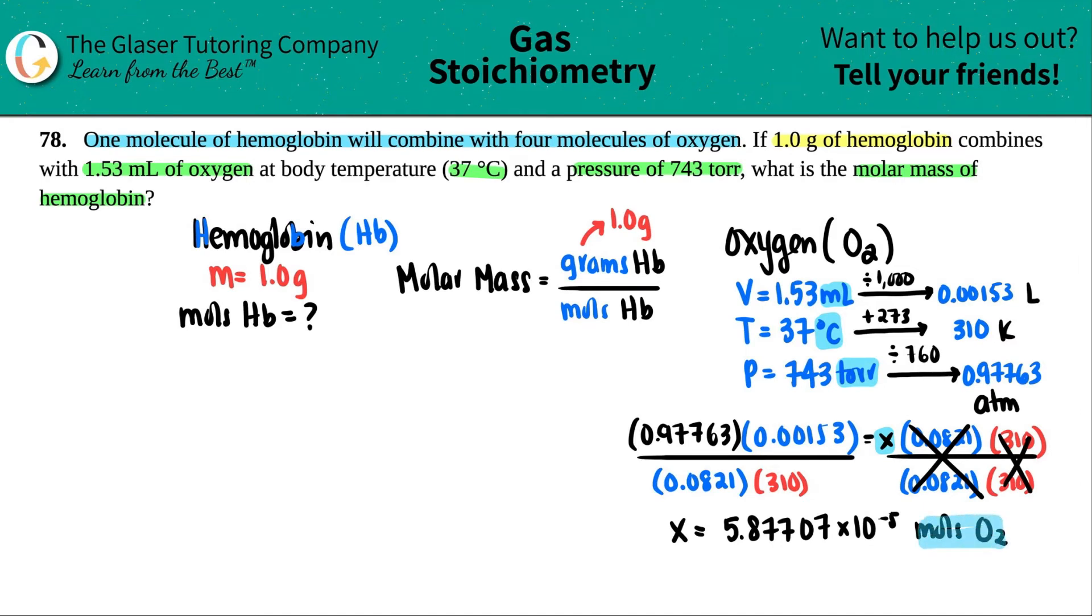Now, I have the moles of oxygen, but somehow I have to take that to moles of the hemoglobin. Well, now we go back to the first sentence. They said that for every one molecule of hemoglobin will combine with four moles of oxygen. So if I just write a ratio, one mole, or we could say molecule, but it's basically the same thing as moles. For every one mole of hemoglobin, it would combine with four moles or molecules of O2. So let's see. I already know the moles of O2. That's going to go on this side. So 5.877 times 10 to the negative fifth. And now we're solving for what is the moles of hemoglobin when I have this amount of moles of oxygen.